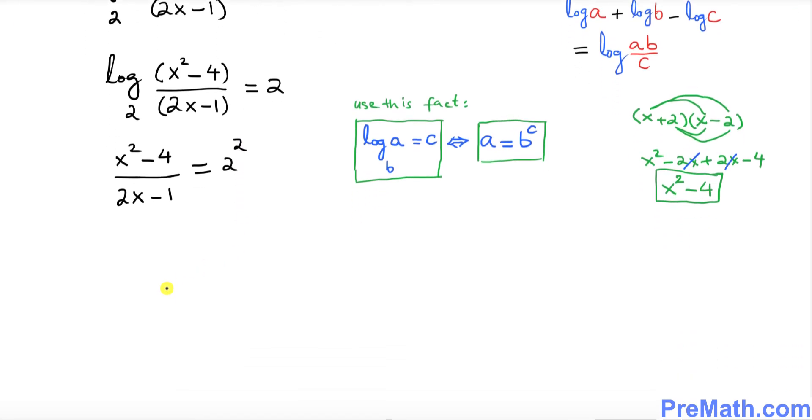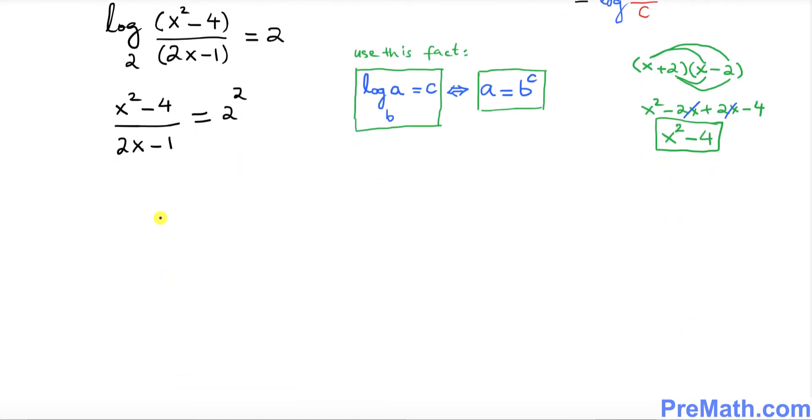Let's go ahead and do the next step over here. On the top we have X squared minus 4 divided by 2X minus 1 equals to 2 power 2 is 4. So far so good.